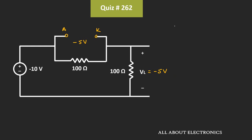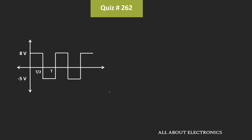So from this, we can say that during the positive half cycle the output voltage Vl will be equal to 8V, and during the negative half cycle it will be equal to minus 5V. And if we see the output waveform, then it will look like this. So it is equal to Vl.